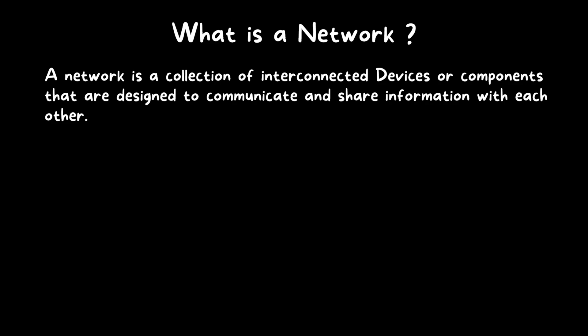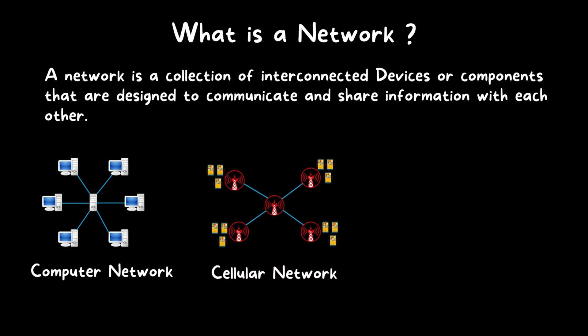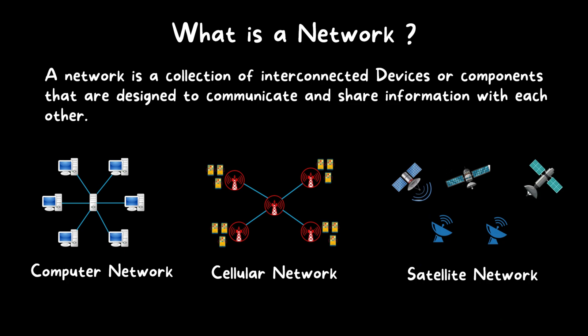What is a network? A network is a collection of interconnected devices or components that are designed to communicate and share information with each other. It can be a computer network, a cellular network, or even a satellite network.